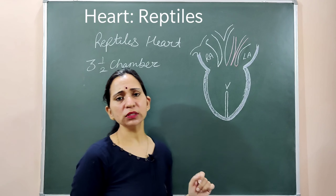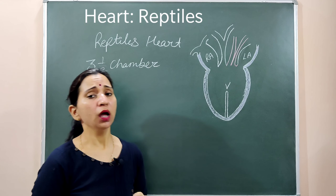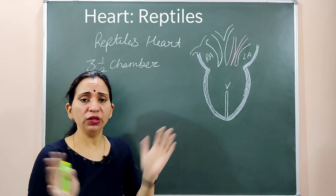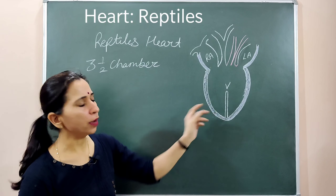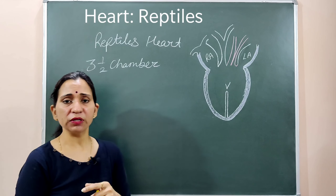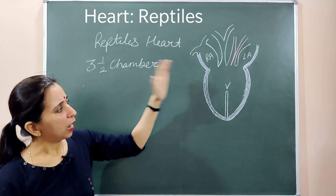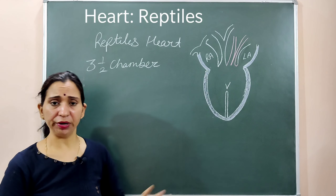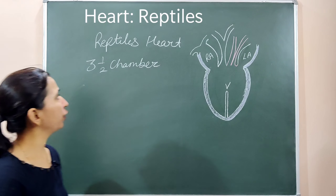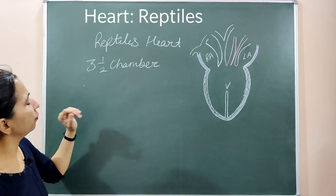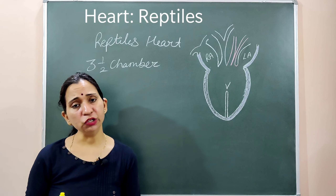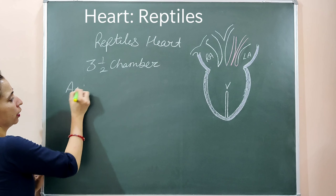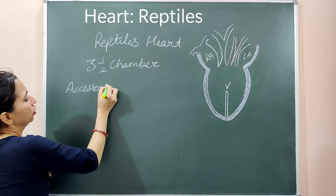In amphibians there were two atria and one ventricle, but in reptiles the ventricles are partially divided. A partial septum forms in the ventricles, which is why the heart is called three-and-a-half chambered. The atria are completely divided into the right atrium and left atrium, but the ventricles are only partially divided. The main primary chambers are the two atria and one ventricle.